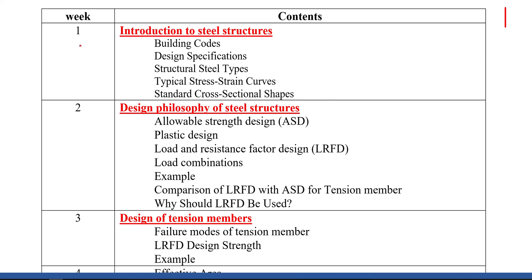Week one is an introduction to steel structures. I'm going to cover important points including building codes and the difference between codes and specifications, the different types of structural steel, typical stress-strain curves for different types of steel, and the different types of standard cross-sectional shapes used in design and examples.